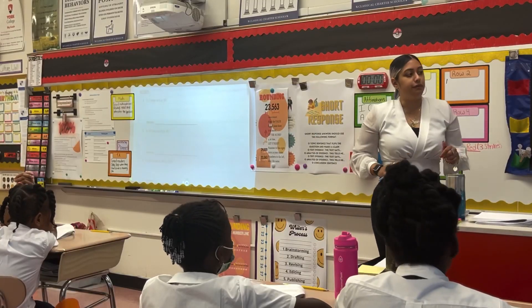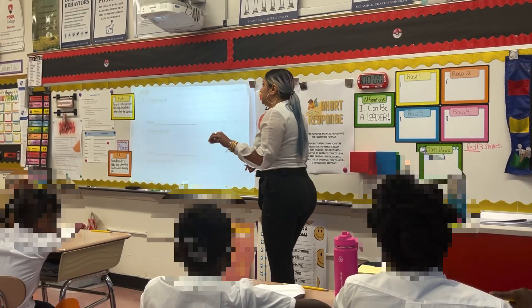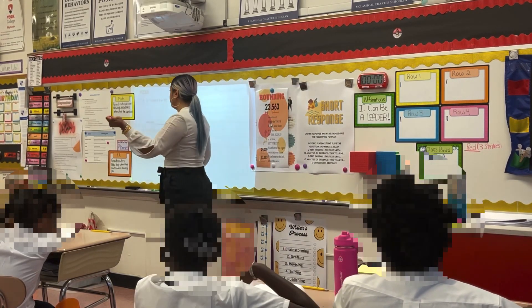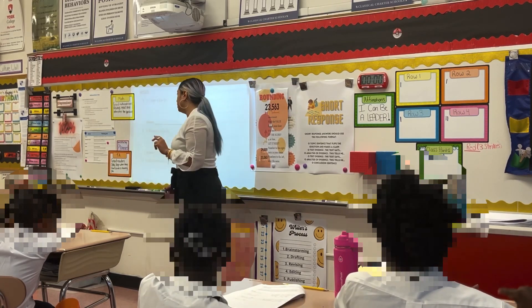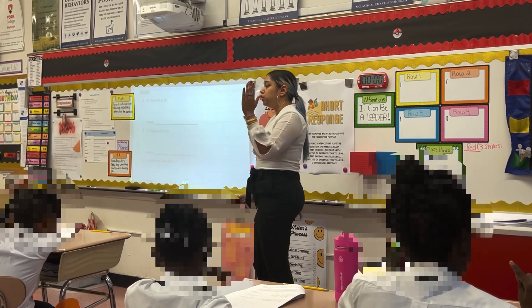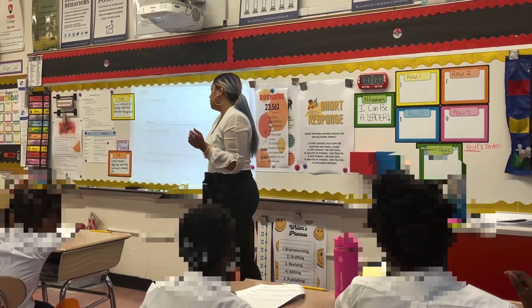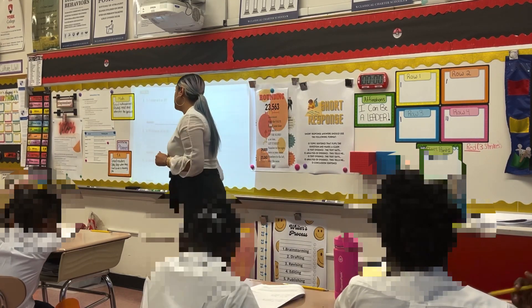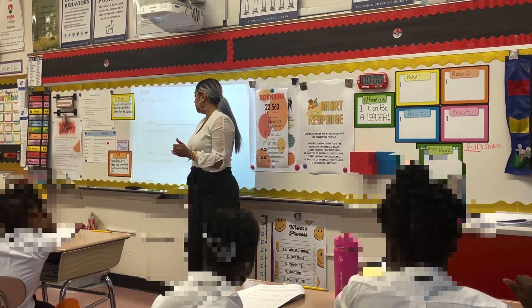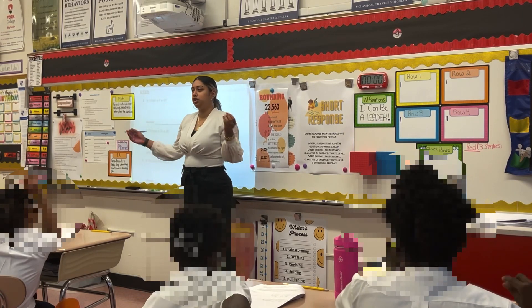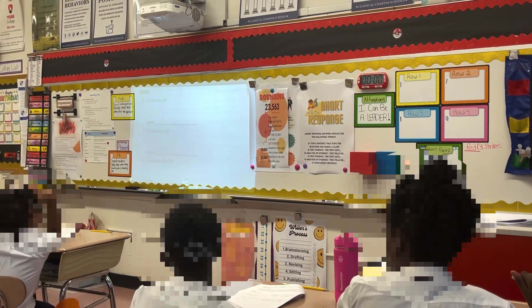Going over our review for today: Is 3 closer to 0 or 10? Zero! Great. Is 29 closer to 20 or 30? 30! Great. And for question 3, is 140 closer to 100 or 200? 100! Beautiful!